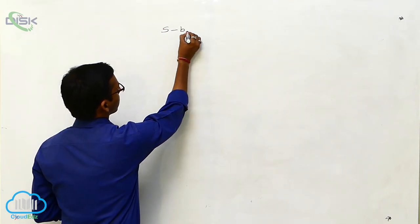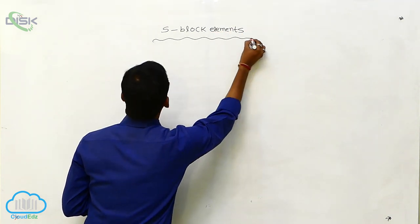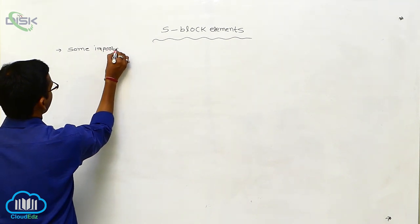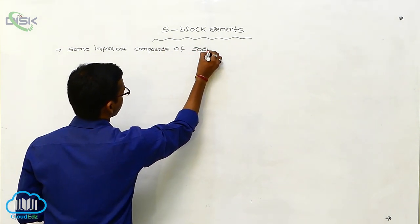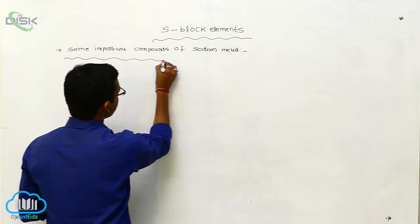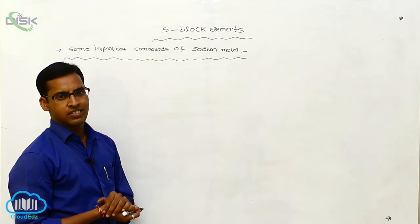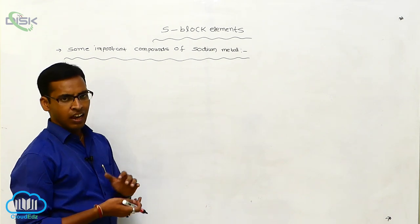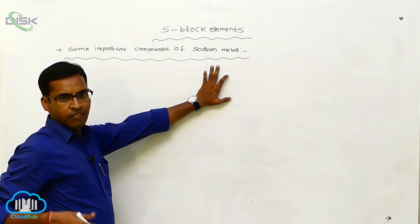Now S-block elements. In this S-block elements topic, we will discuss some important compounds of sodium metal. Sodium belongs to the first A-group element, and it forms different types of compounds like chlorides, sulfates, bicarbonates, carbonates — sodium carbonate, sodium bicarbonate, sodium chloride, sodium sulfate, and so on. These sodium compounds are used in daily life.